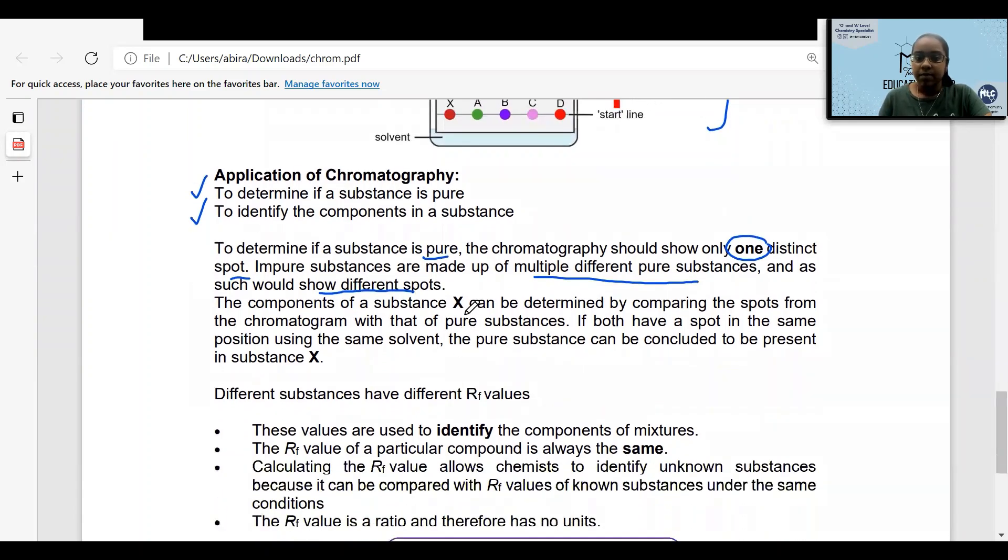The components of a substance X can be determined by comparing the spots from the chromatogram with that of pure substances. If both have a spot in the same position using the same solvent, the pure substance can be concluded to be present in substance X.